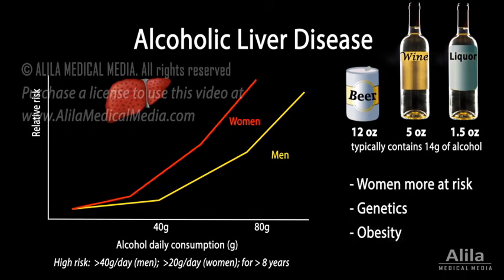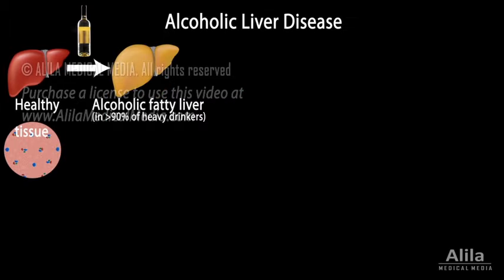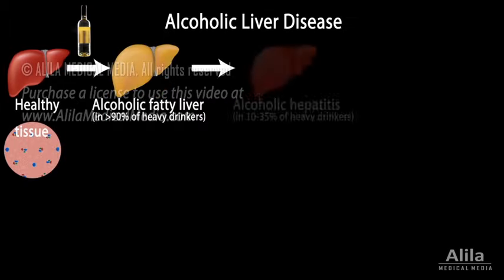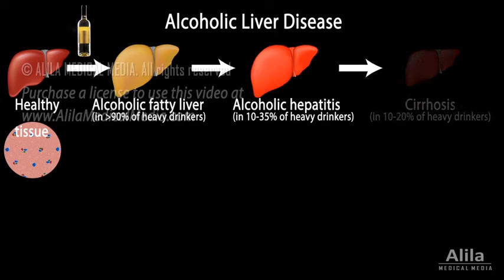Alcoholic liver disease includes three disorders that develop in sequence: alcoholic fatty liver, alcoholic hepatitis, and cirrhosis.